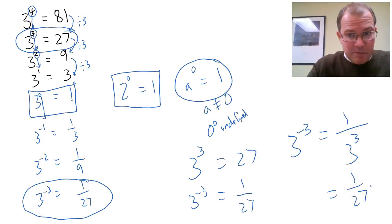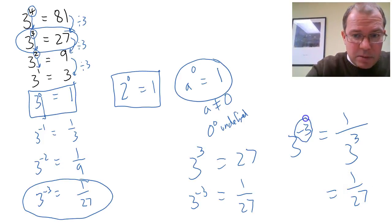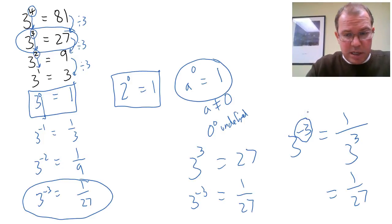So when you have a negative power here, a negative exponent or index depending on what country you're listening from, then it's the reciprocal of the positive exponent. So here's the positive exponent or index. That's how to deal with negative indices and negative powers.